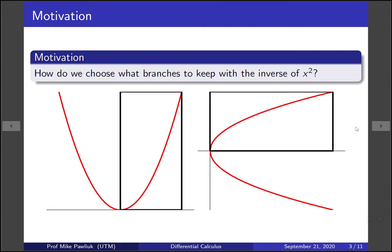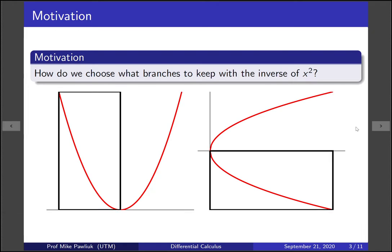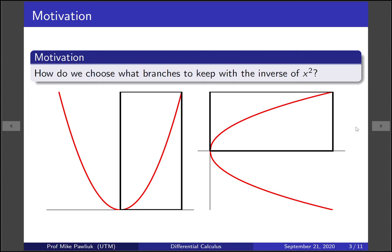So one option would be to pick the top branch, one option would be to pick the bottom branch, and what we end up settling with is the top branch.